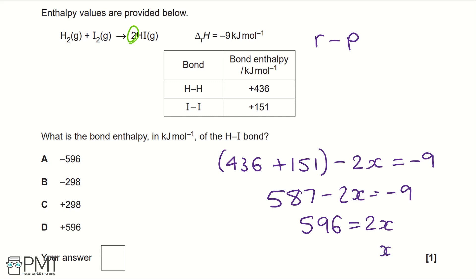Dividing by 2 would give us x at 298. It is a positive value. So looking at our options, that would be C.